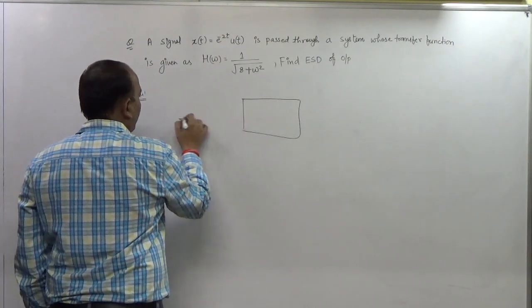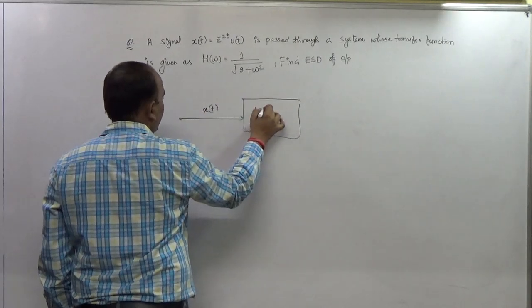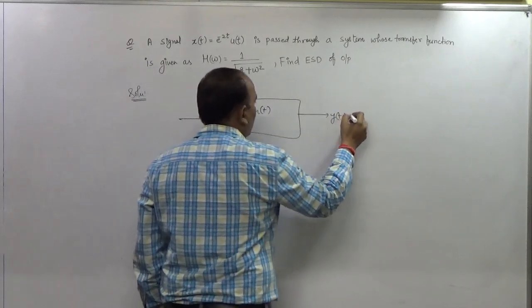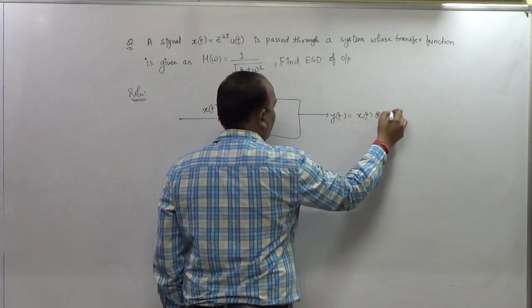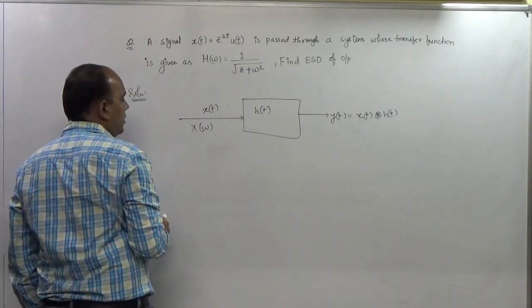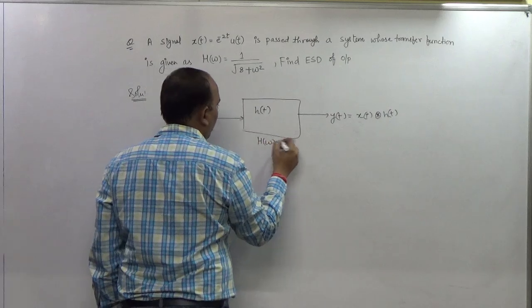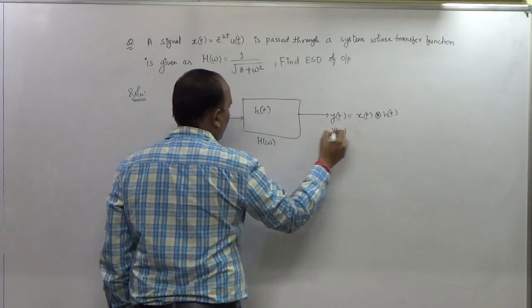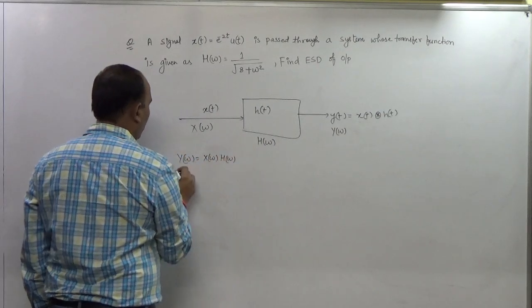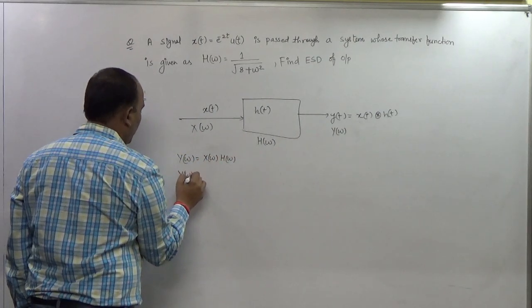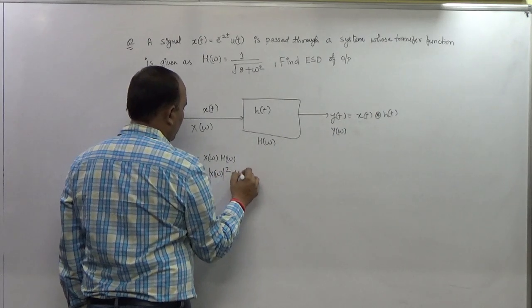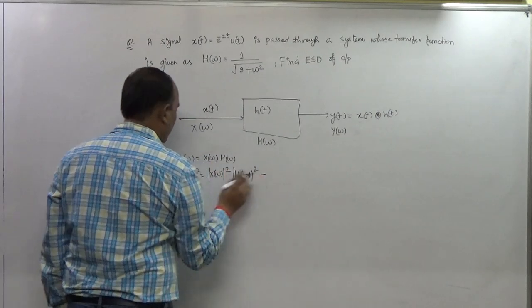For the ILTI system, we have x(t) as input, h(t) as the system, and y(t) as output. y(t) is just the convolution of x(t) and h(t). In the frequency domain, with Fourier transforms X(ω), H(ω), and Y(ω), we can say Y(ω) = X(ω) · H(ω), or |Y(ω)|² = |X(ω)|² · |H(ω)|².